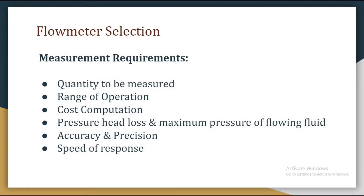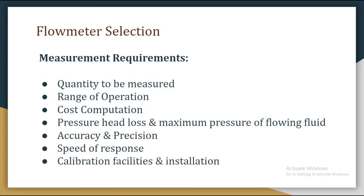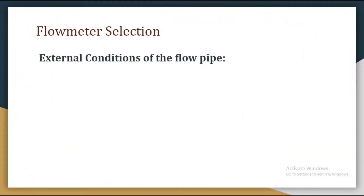The next thing is speed of response. For fluctuating flow, the response of the meter should be good, with a small time constant. For a good laminar flow profile it may be fine, but for fluctuating flow the response must be good and the time constant should not be too large. We should also be familiar with calibration facilities and installation.